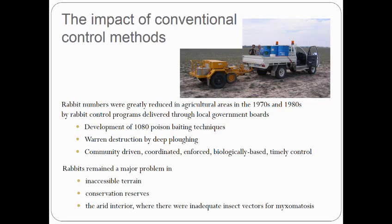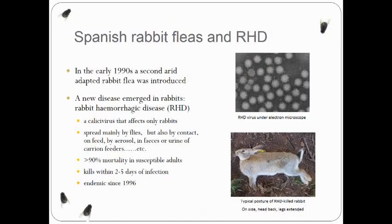Rabbits still remained problematic in areas where access was denied due to terrain or vegetation, in conservation reserves, and in the arid interior where myxomatosis wasn't effective because there were few biting insect vectors. To overcome that problem in the arid zone, in the early 1990s a second arid-adapted flea species was introduced from Spain.